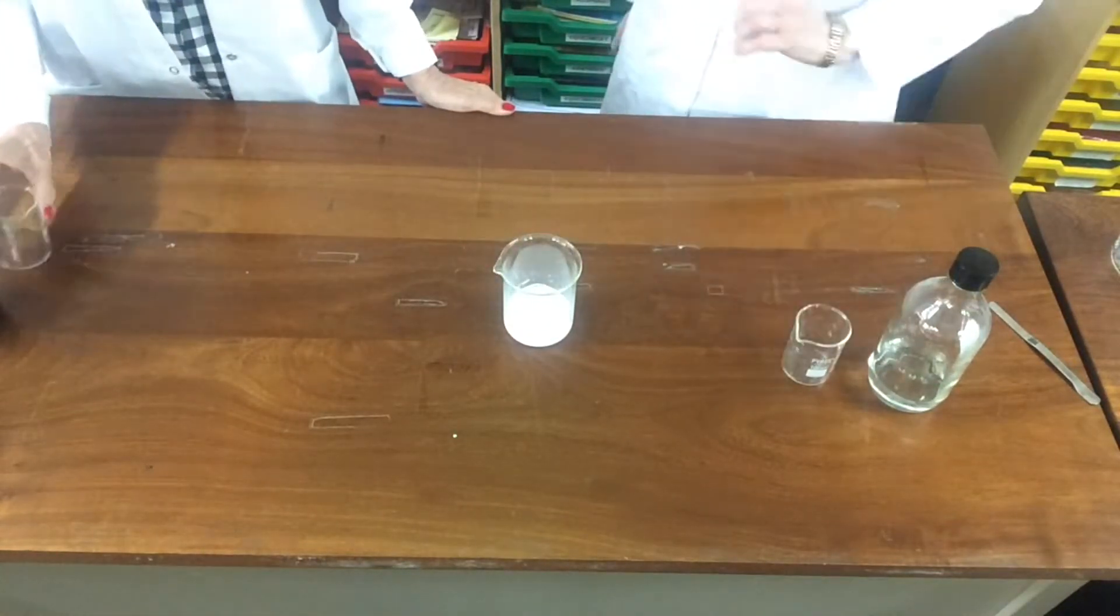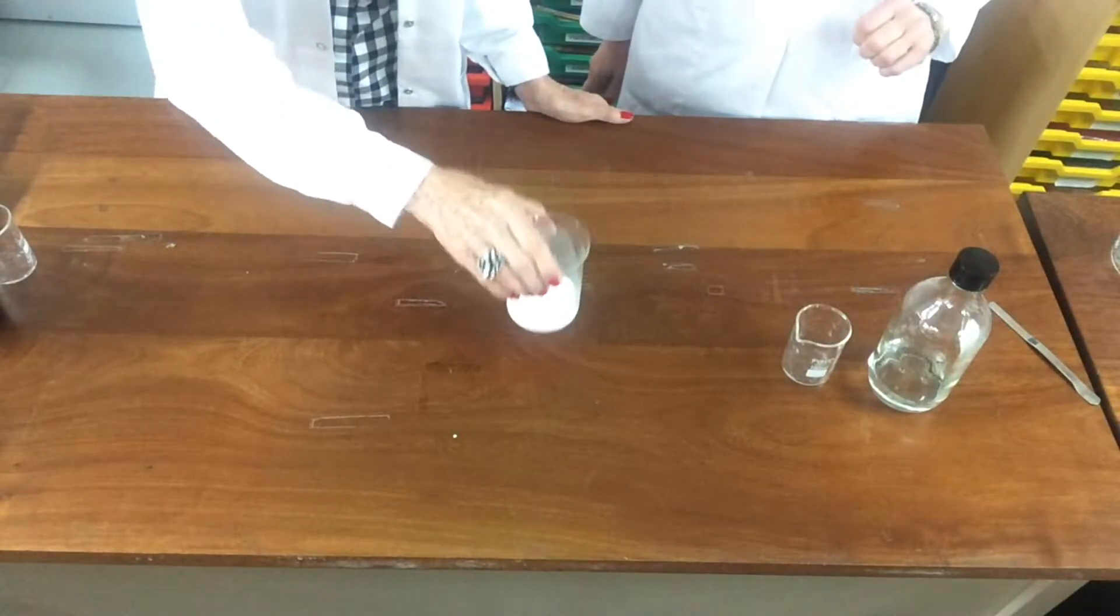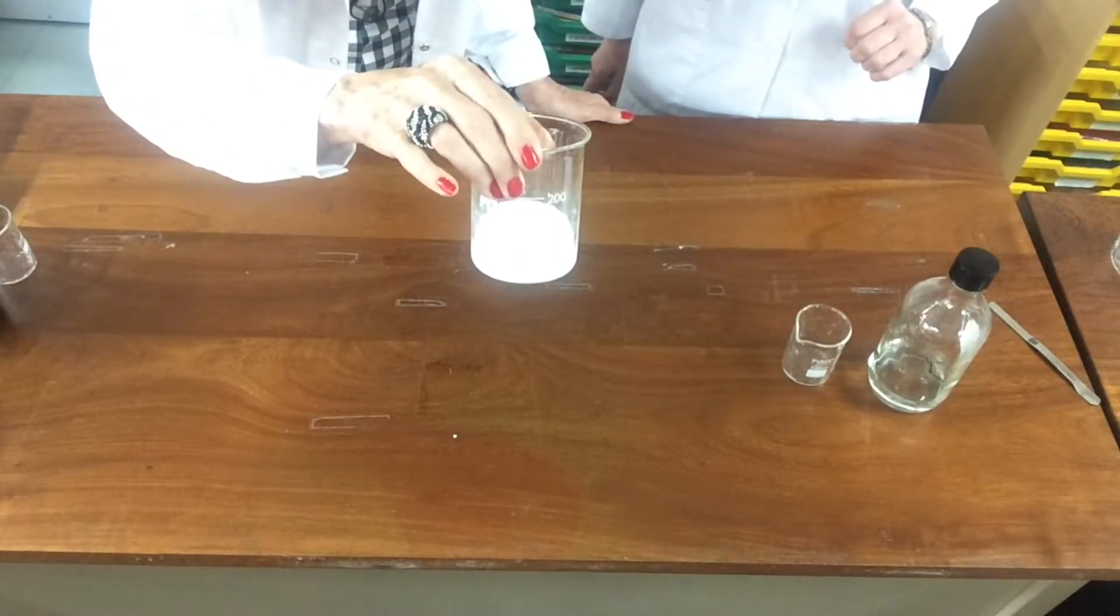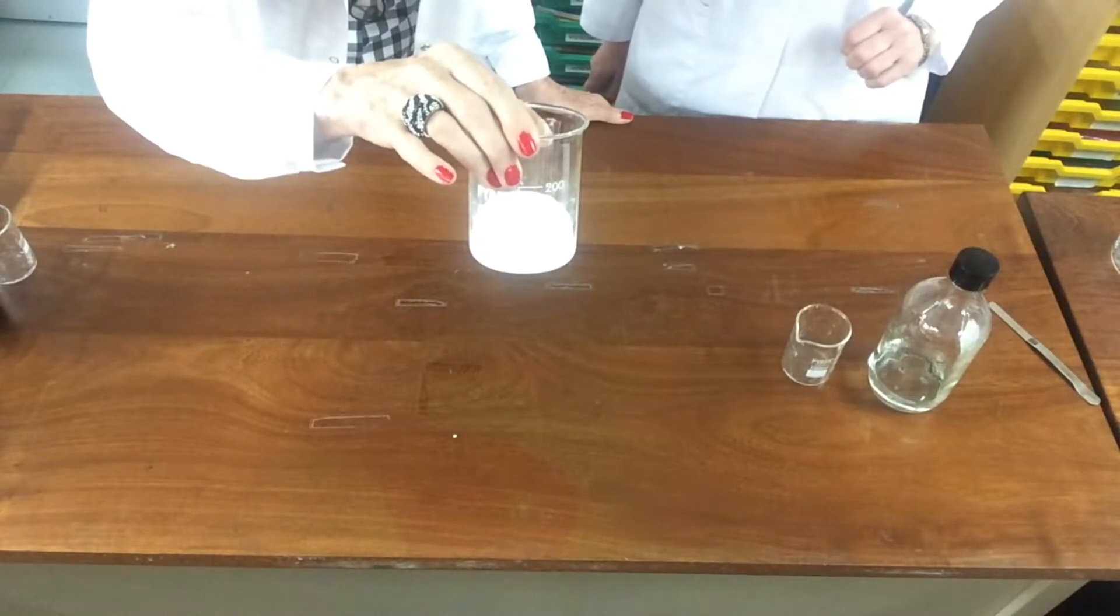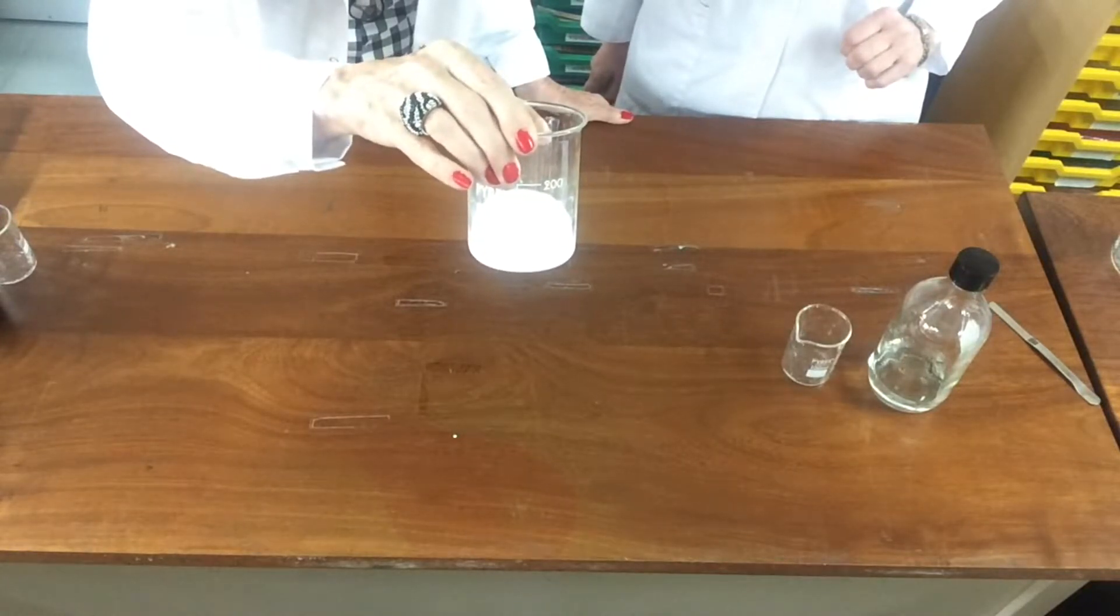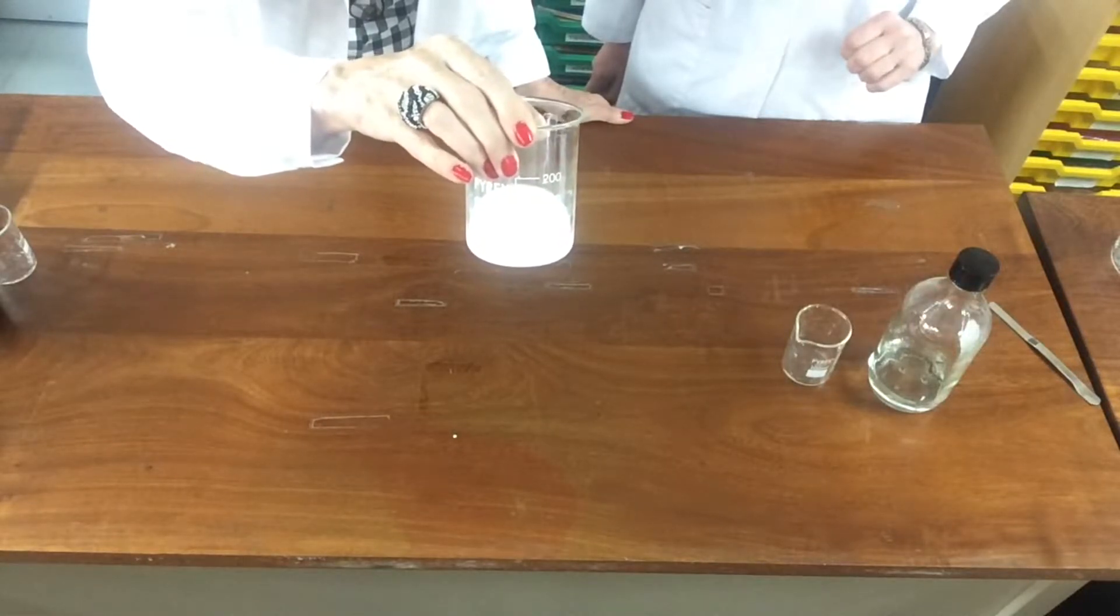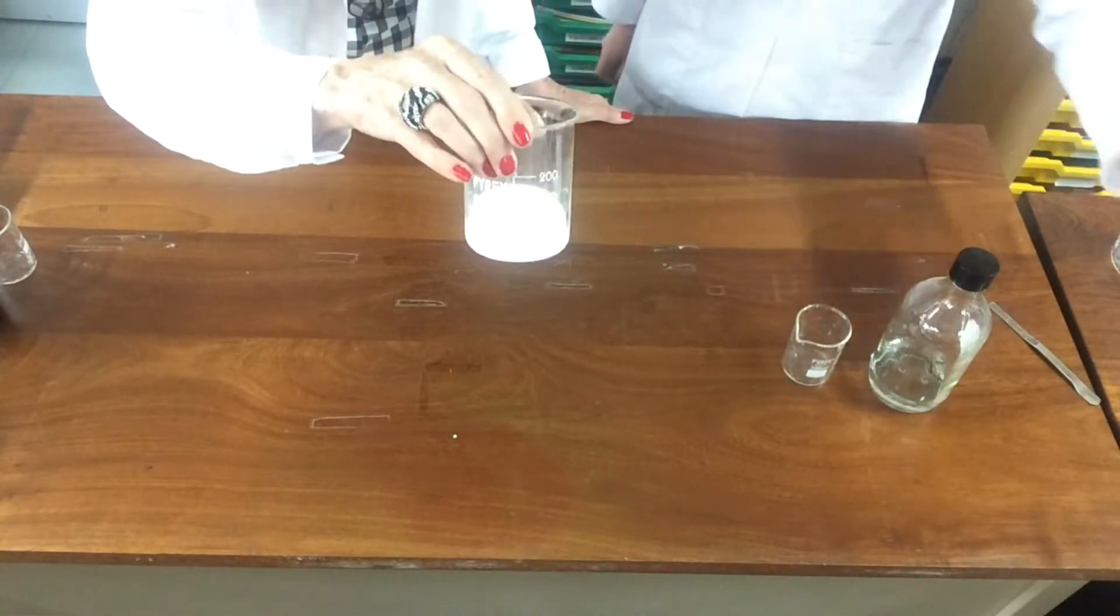Now if you notice there has been a reaction. Can you see it looks as if it's a milky mixture. Now look closely. That milky mixture is made up of a white solid and a colourless liquid. Now here's one we've prepared earlier.